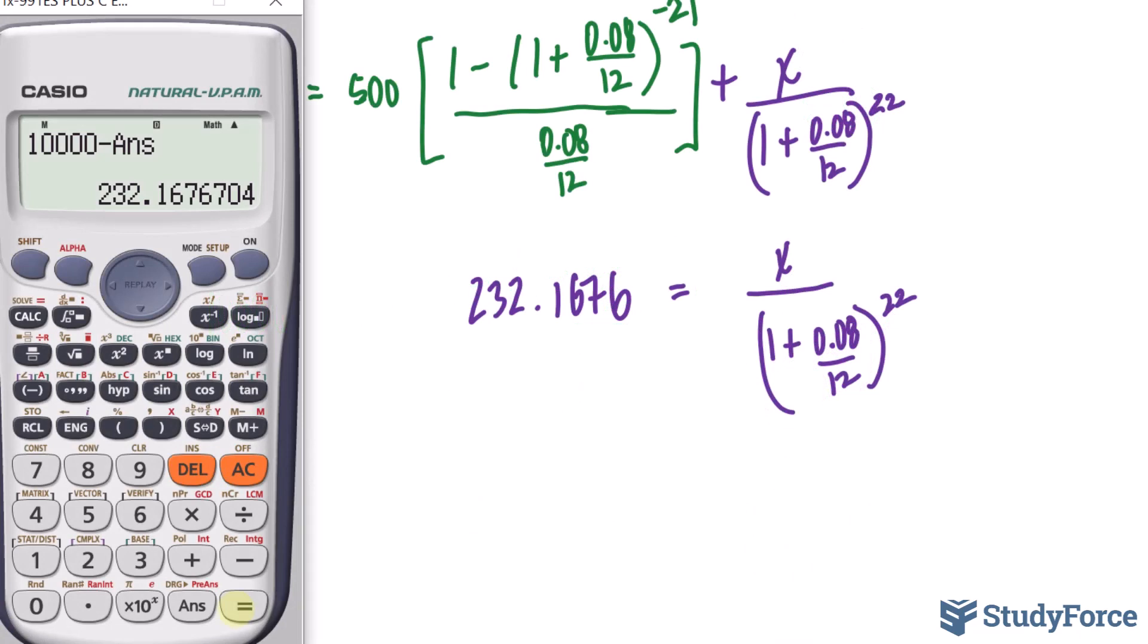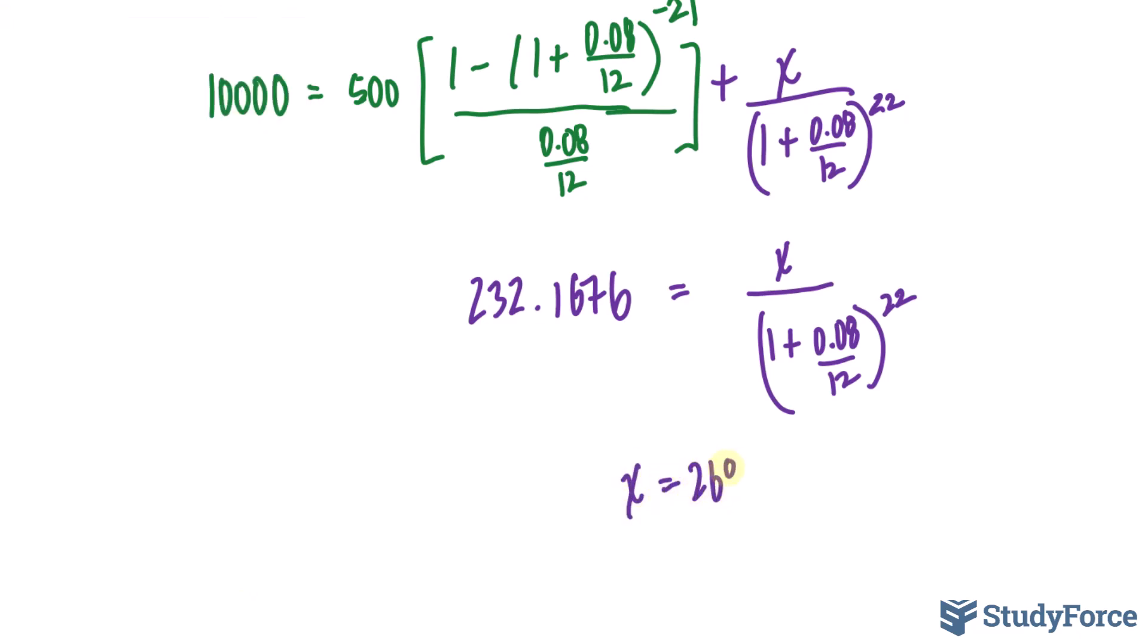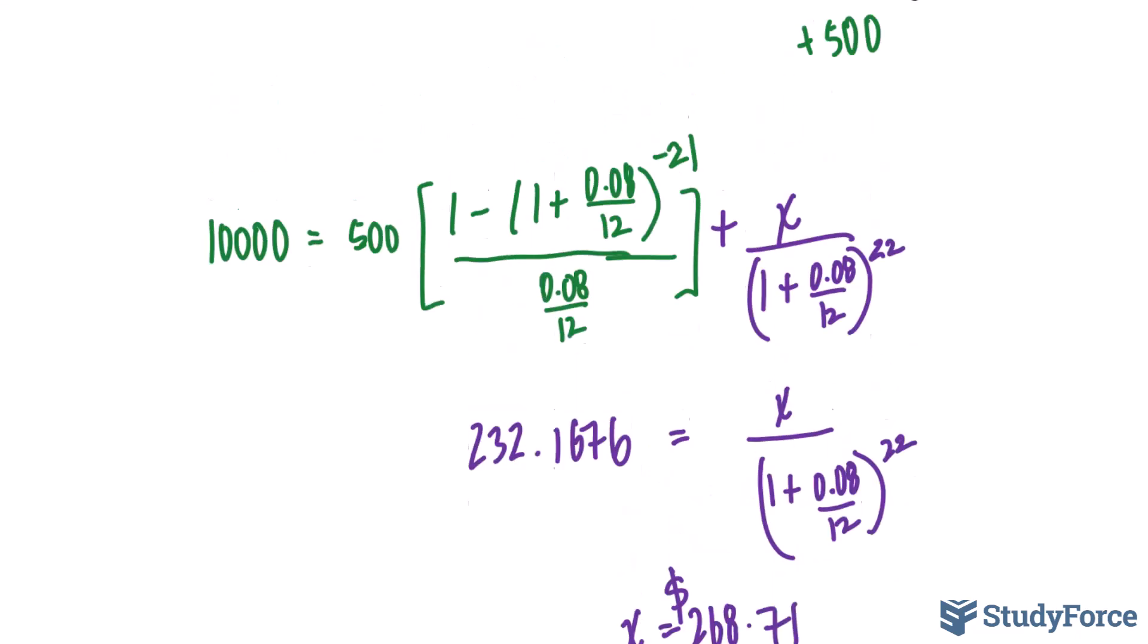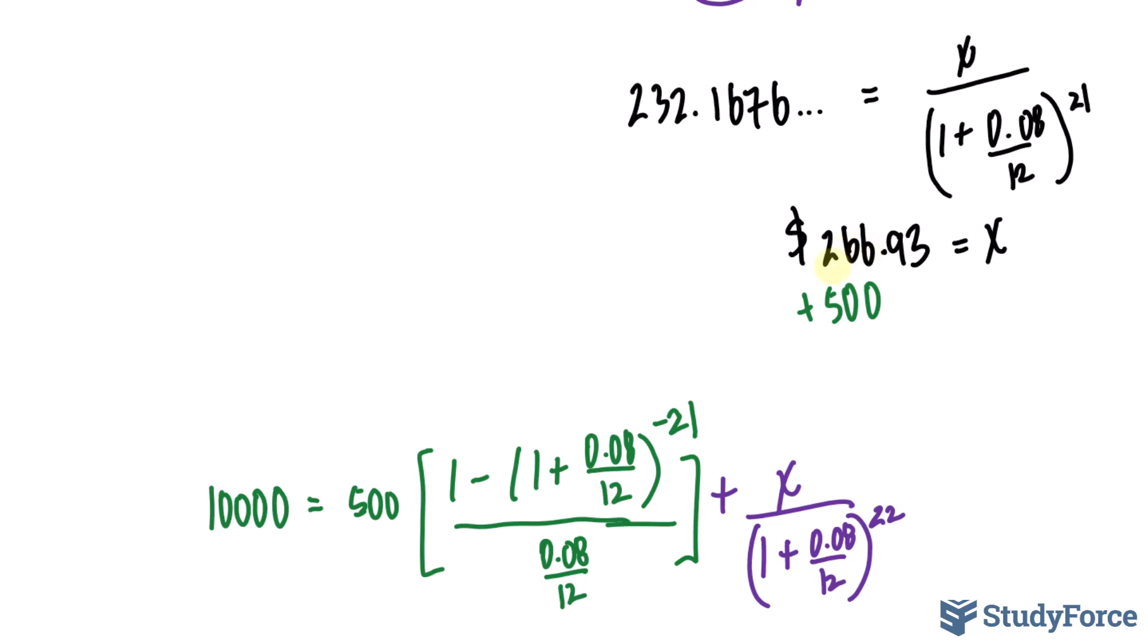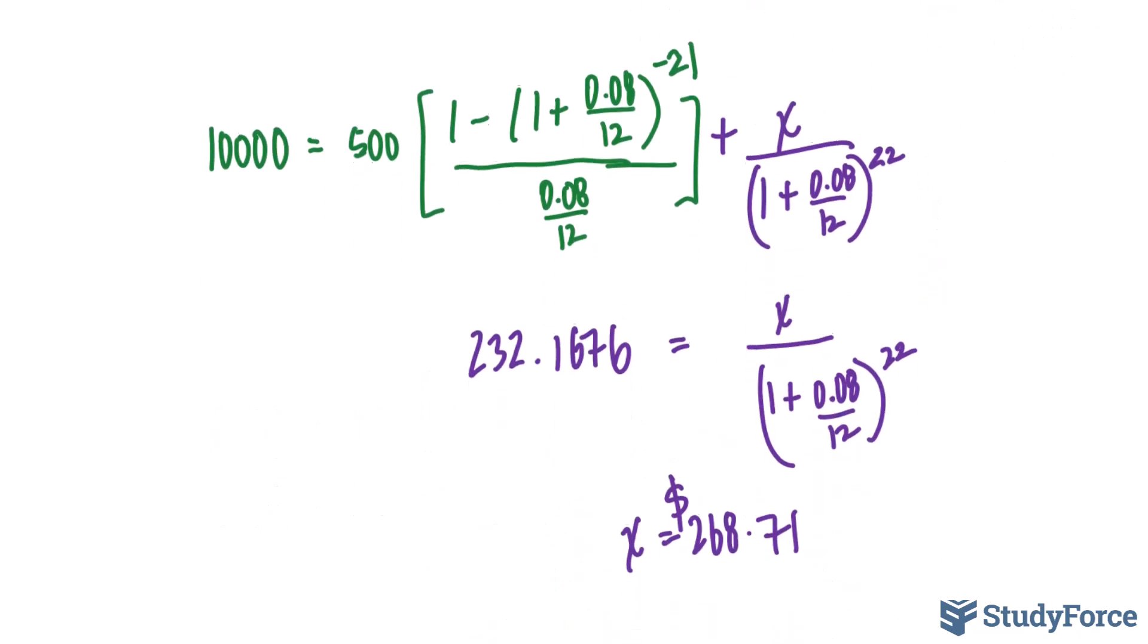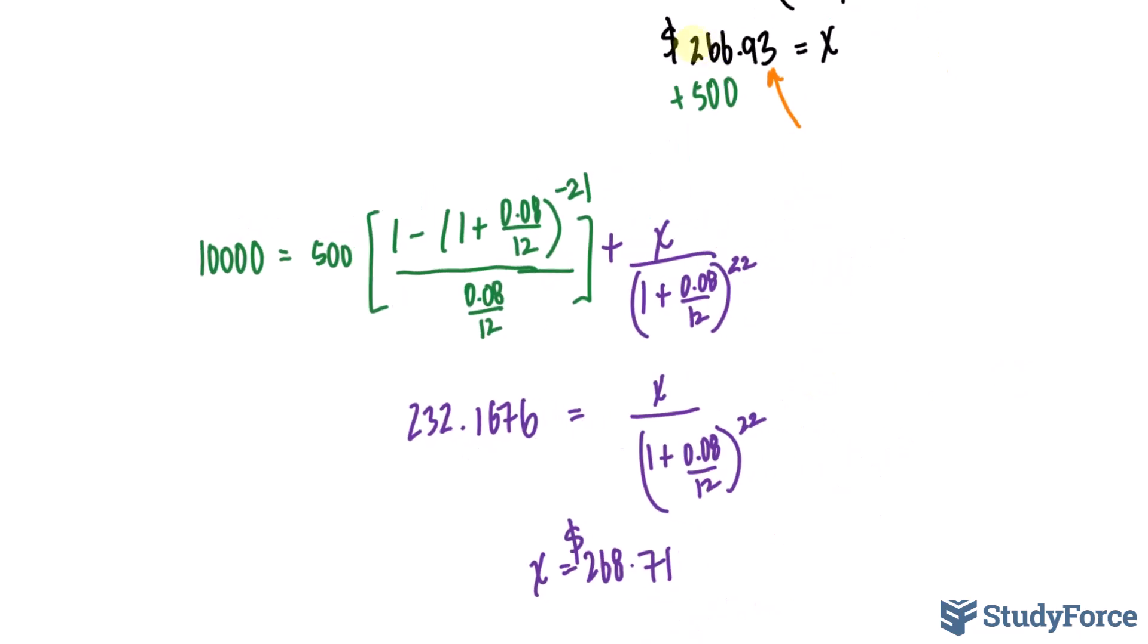Taking the value on the calculator and multiplying it by 1 plus 0.08 divided by 12 raised to the power of 22 gives us a value of X that is slightly larger than what we calculated earlier. This is expected because we're deferring this payment of $266.93 one period later. Interest accrues on this, and the amount of interest is shown in the difference. Technically, you could have found the final drop payment by finding the future value of this one period later at the same interest rate. I hope you now see the difference between a balloon payment and a drop payment.